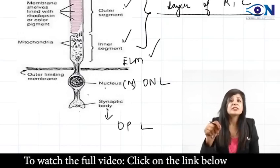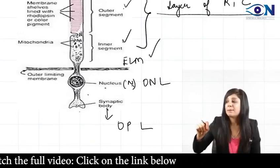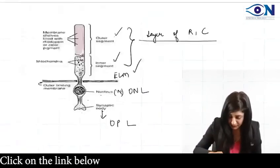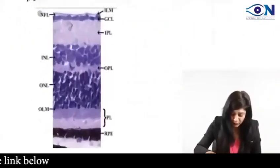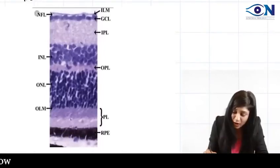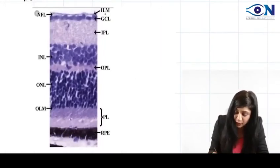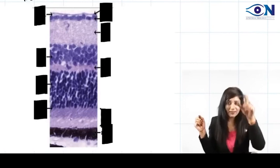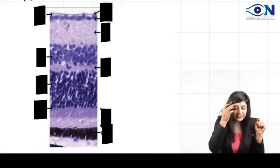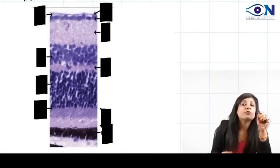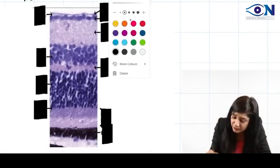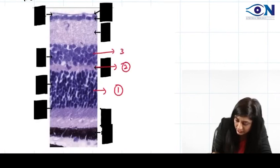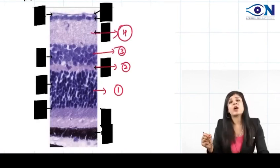The nucleus is in the outer nuclear layer and the synaptic body is in the outer plexiform layer. Histology may seem like a nightmare, but after this session it will be a piece of cake and you will want this question to come in the exam. In the examination, you will get a section of the retina like this — without labeling — and they will ask which layer of the retina it is. They may show any four layers and ask for the names.